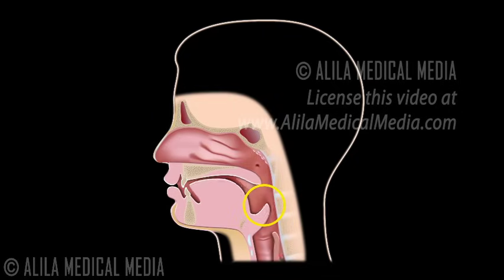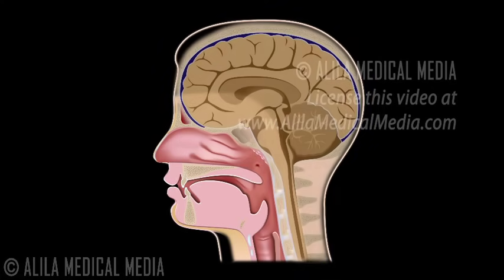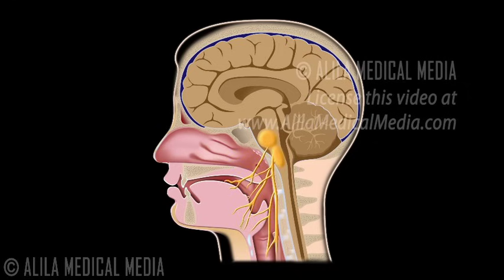Failure to coordinate would result in choking or pulmonary aspiration. Swallowing involves over 20 muscles of the mouth, throat and esophagus, which are controlled by several cortical areas and by the swallowing centers in the brainstem. The brain communicates with the muscles through several cranial nerves.